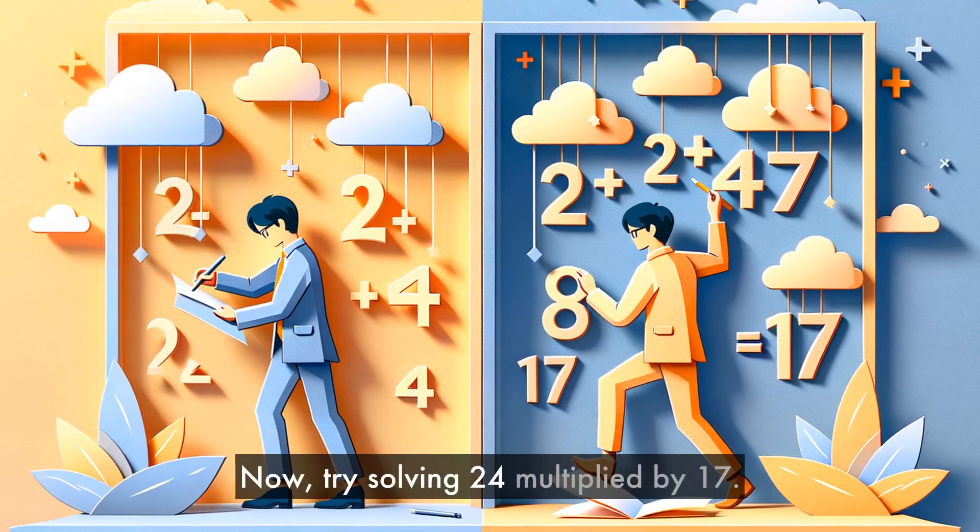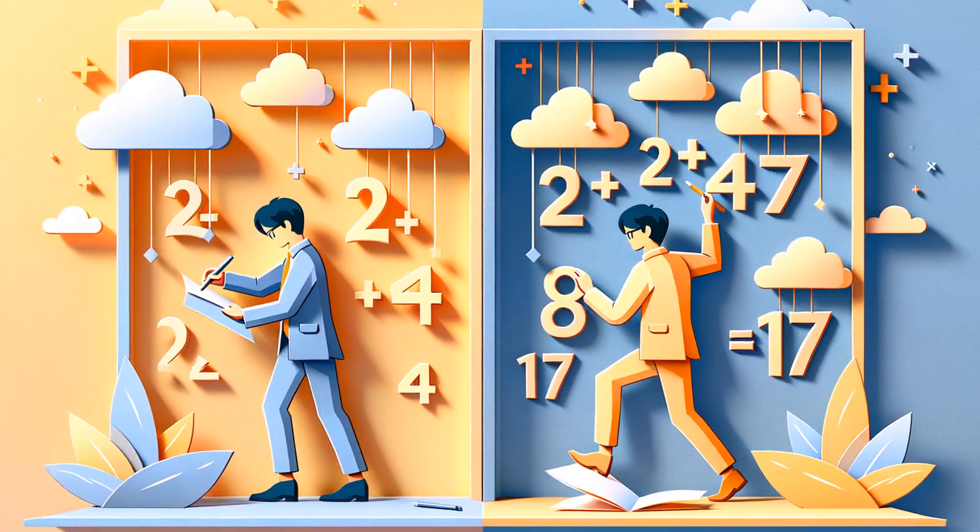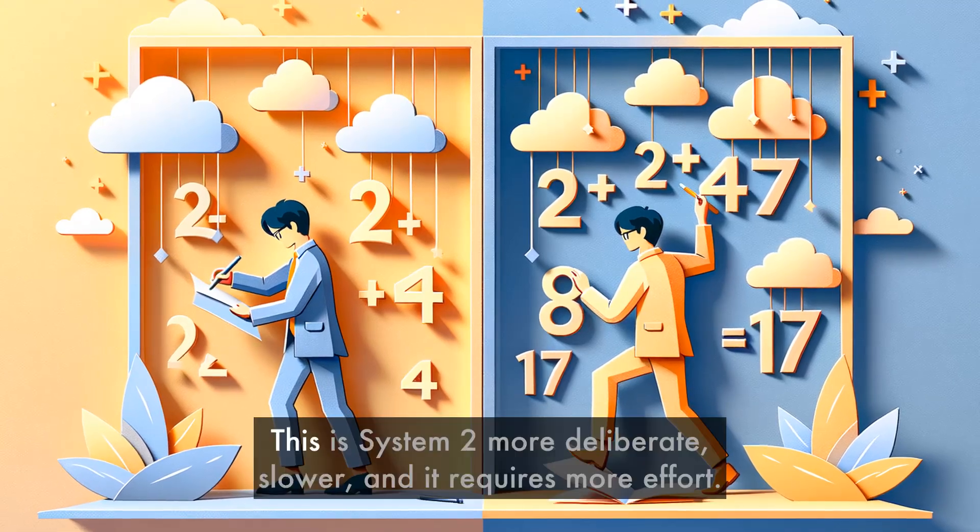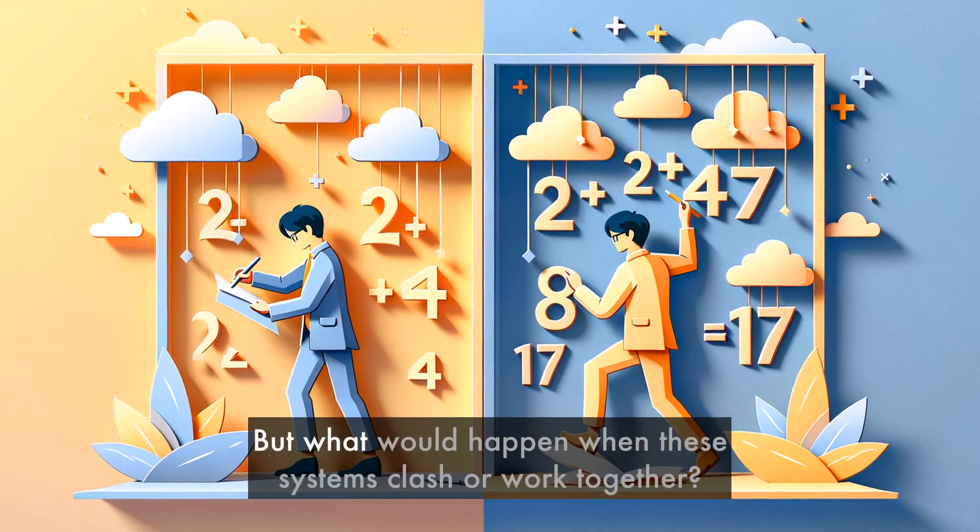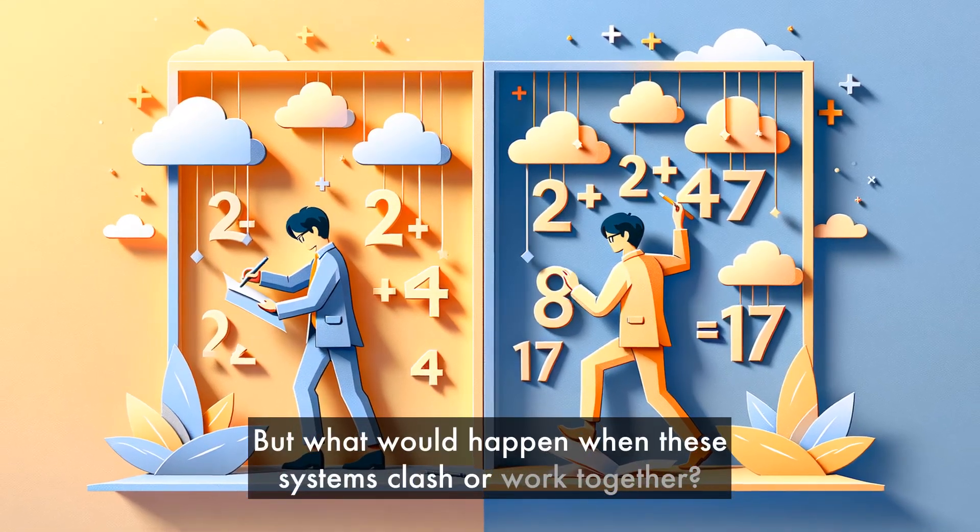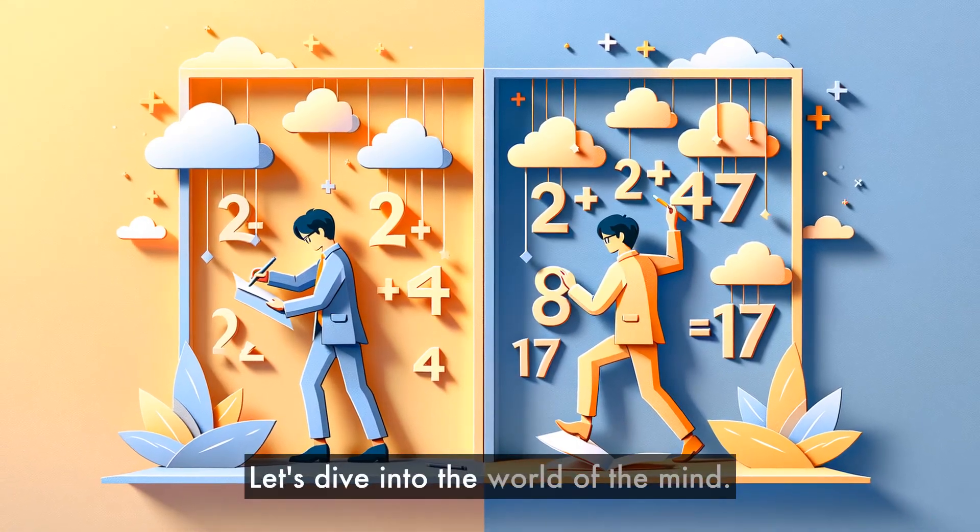Now try solving 24 multiplied by 17. That's a bit challenging, isn't it? This is system 2, more deliberate, slower, and it requires more effort. But what would happen when these systems clash or work together? Let's dive into the world of the mind.